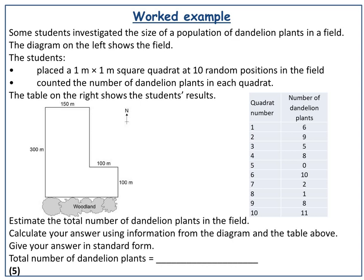First, find the mean number. You've got ten quadrats, so add all the counts together — 6, 9, 5, 8, 0, 10, 2, 1, 8, 11 — and divide by ten. The answer you come up with is 6. So the mean is 6.